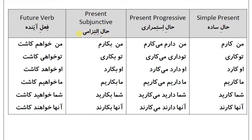Present subjunctive: من بکارم، تو بکاری، او بکارد، ما بکاریم، شما بکارید، آنها بکارند. Future tense: من خواهم کاشت، تو خواهی کاشت، او خواهد کاشت، ما خواهیم کاشت، شما خواهید کاشت، آنها خواهند کاشت.